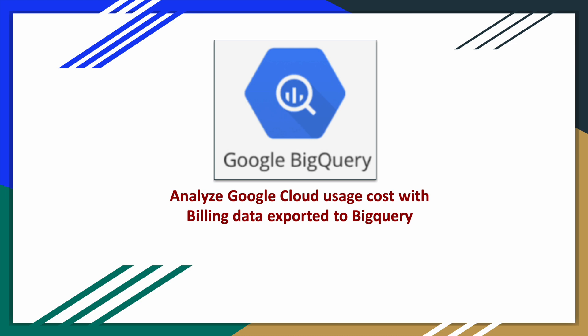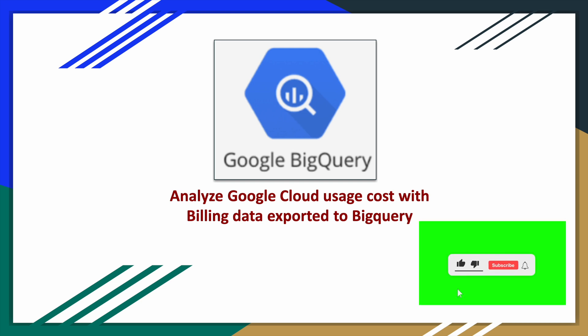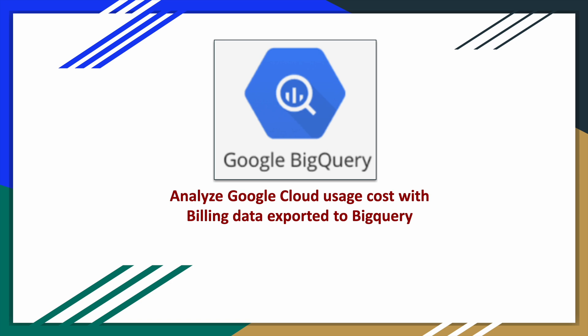As a Google Cloud Platform user, everybody is interested to know their usage cost. In this video we will focus on this particular use case where we will examine different ways to export billing data into BigQuery using different methods, and using SQL we will analyze the data. If time permits, we will also see how Looker Studio — earlier called Data Studio — can be used to build dashboards and reports for better visualization. We have extensive documentation available in the GCP official documentation; search for 'billing export using BigQuery' and you will find queries for each and every use case.